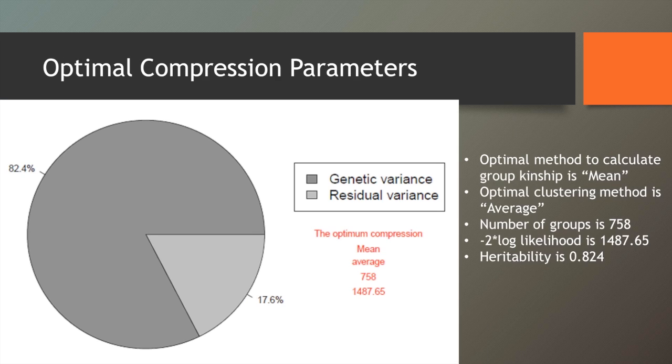And this might be a little confusing for some of you. If you're not really familiar with compression, basically it gives you the methods that it's using. So the optimal method to calculate group kinship, they use the mean, and then there's different clustering methods, and so the best clustering method was average. It tells you that the number of groups was 758, and if you remember, we only had 768 lines, so it treated most of them as individuals. And then finally, it gives you the negative log likelihood, but it does also GAPIT, it estimates heritability of the trait, so in our case it was 0.82, which is pretty high, which is what we expect for grain protein content in barley. And we can talk more about this in the actual live demo.